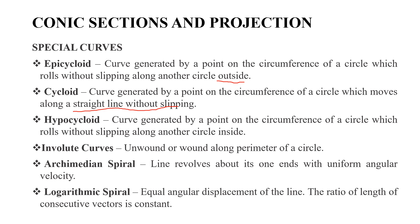A hypocycloid is generated by a point on the circumference of a circle which rolls without slipping along another circle on the inside. The circumference of the rolling circle generates the hypocycloid.